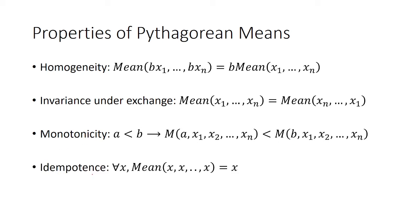The last one is idempotence, which says for all x, if we find the mean of numbers that are all the same, the mean is just going to be x.